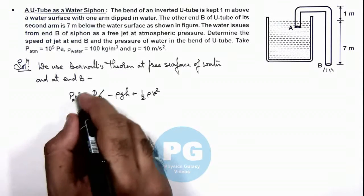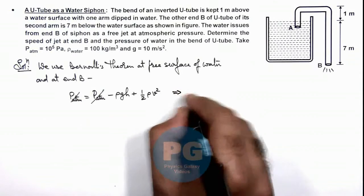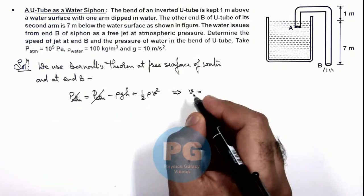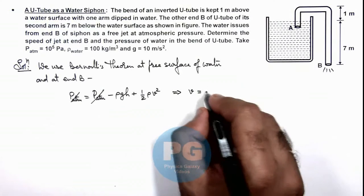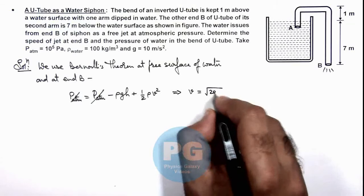Plus the kinetic energy of fluid per unit volume is half ρv². Here P atmospheric gets cancelled out, and this gives us the value of velocity of water jet that is equal to √(2gh).